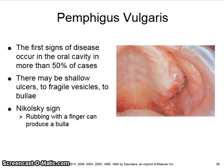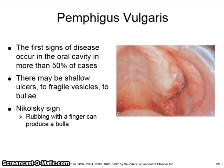The patient with pemphigus vulgaris has circulating autoantibodies that are reactive against components of the epithelial cell attachment mechanism. In over 50% of cases, the first signs of disease occur in the oral cavity. There may be shallow ulcers to fragile vesicles to bullae. Gentle finger pressure with movement on clinically normal mucosa can produce a cleavage in the epithelium and result in the formation of a bulla. This is called a positive Nikolsky sign.